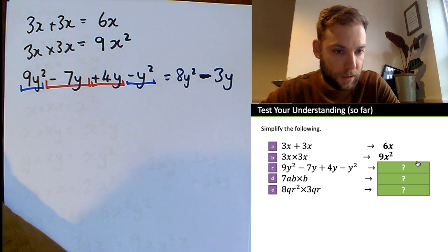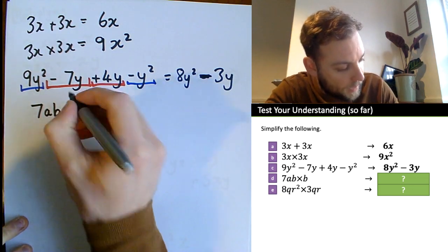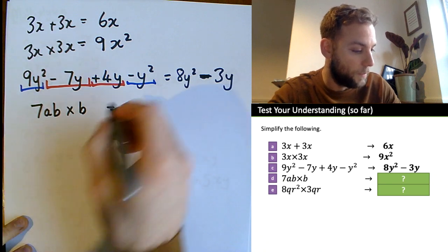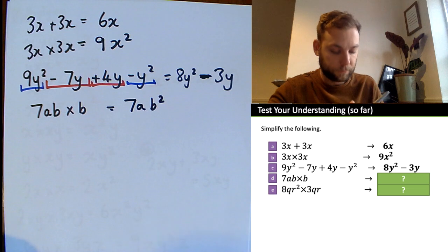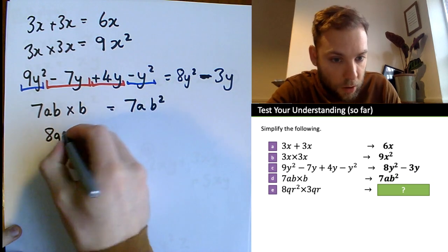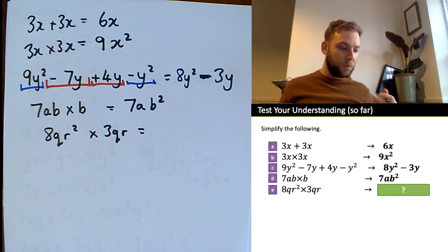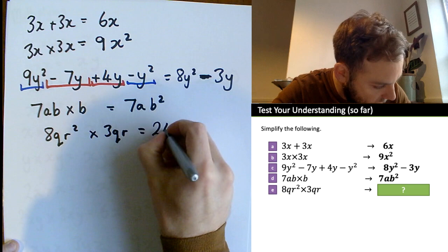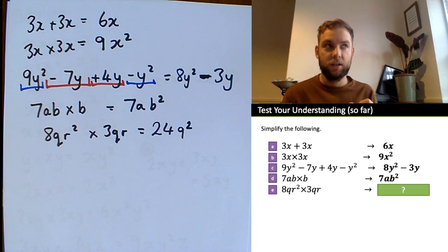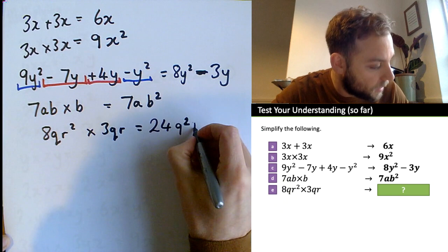Next: 7ab times b — we're multiplying, so 7ab times b gives 7ab squared. Last question: 8qr squared times 3qr — 8 times 3 is 24, q times q is q squared, r squared times r is r cubed. Final answer: 24q squared r cubed.